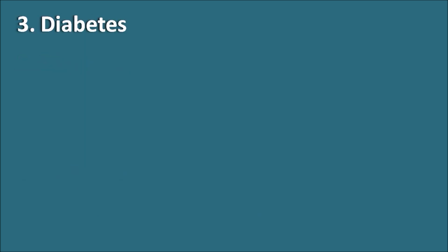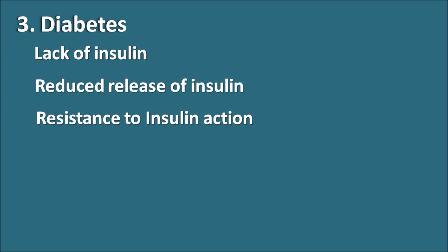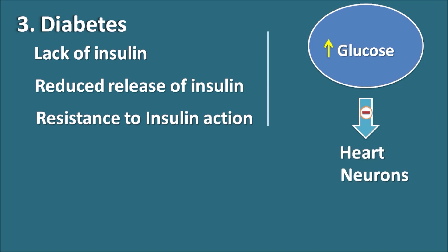The third risk factor is diabetes, which may be either type 1 or type 2. In type 1 there is a lack of insulin, but in type 2 there is reduced release of insulin as well as increased resistance to insulin action. Either mechanism may cause raised glucose levels within the blood, which may cause deleterious effects on other organs. When glucose levels are abnormally raised and not controlled, they can affect organs like the heart, neurons, and kidneys.